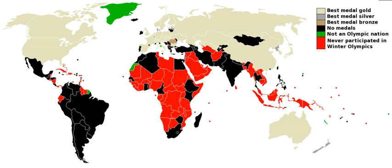Germany has competed under five different designations, including as two separate teams at several games. Sources vary in how they present the medals won by these teams. The table below shows sourced combinations of these teams, when applied to the updated medal totals from the main table.